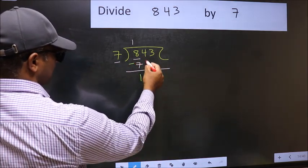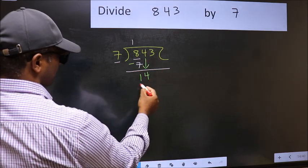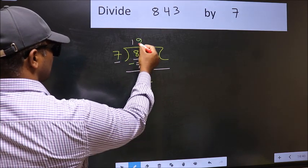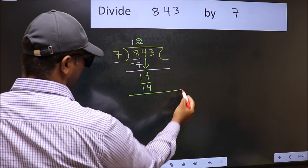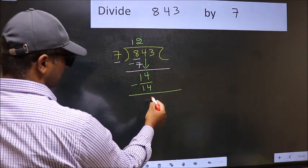After this, bring down the next number. So 4 down. Now 14. When do we get 14 in 7 table? 7 times 2 is 14. Now you should subtract. 14 minus 14 is 0.